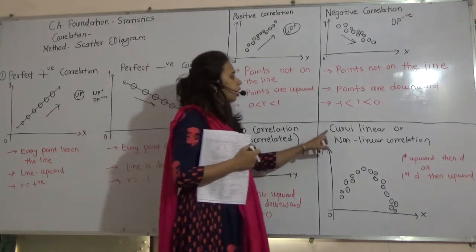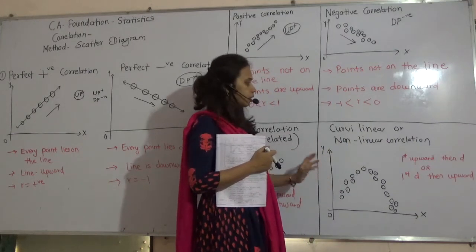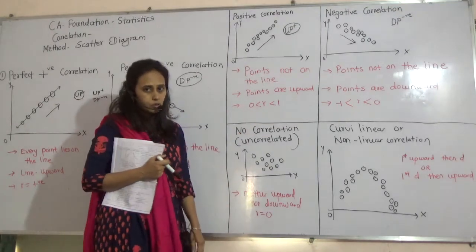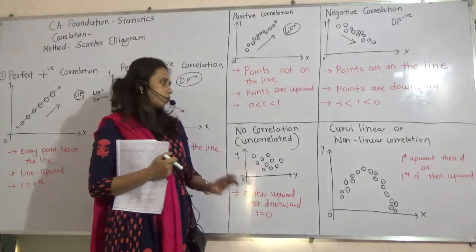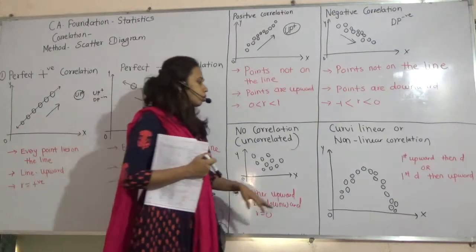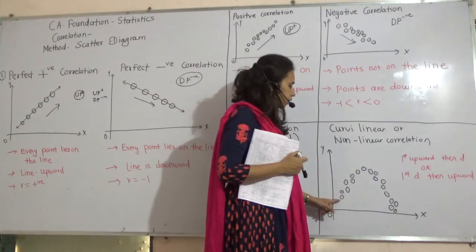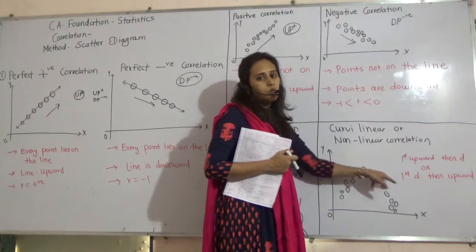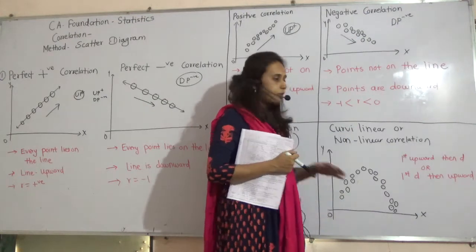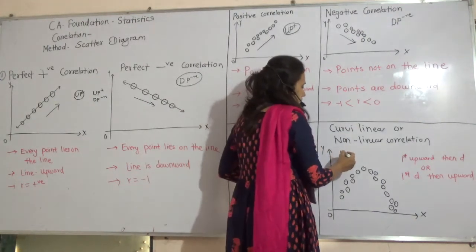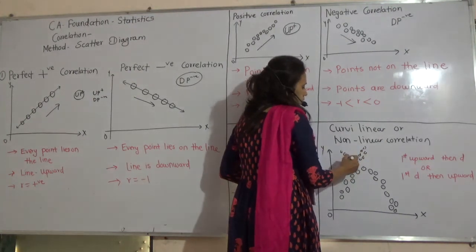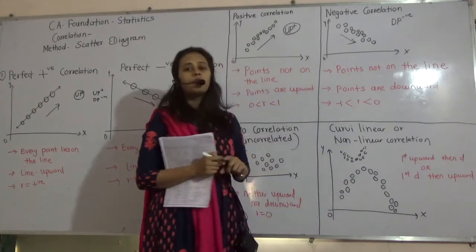Now, the last one is curvilinear. Curvy. Curvy means what? It is forming curve. It's not downward or upward looking. But, it is in the curve form. Or, non-linear. Linear means straight. Non-linear means not straight. So, in this case, what happens? It first moves upward, then go downward. Or, it may go first downward and then upward. Like this only. It may go downward and then upward. It's not in a straight line. So, it is called curvilinear.